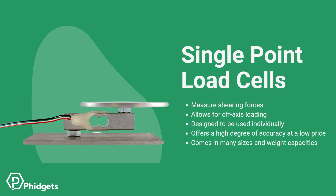Single Point Load Cells measure shearing forces. They're designed with holes machined out of the middle, which encourages the beam to bend along the measurement axis. These load cells are often used in kitchen scales and similar applications because they allow for off-axis loading, meaning objects can be placed anywhere on the scale platform and the results will still be accurate. They're designed to be used individually and offer a high degree of accuracy while keeping cost and complexity low. Single Point Load Cells come in various sizes and weight capacities.